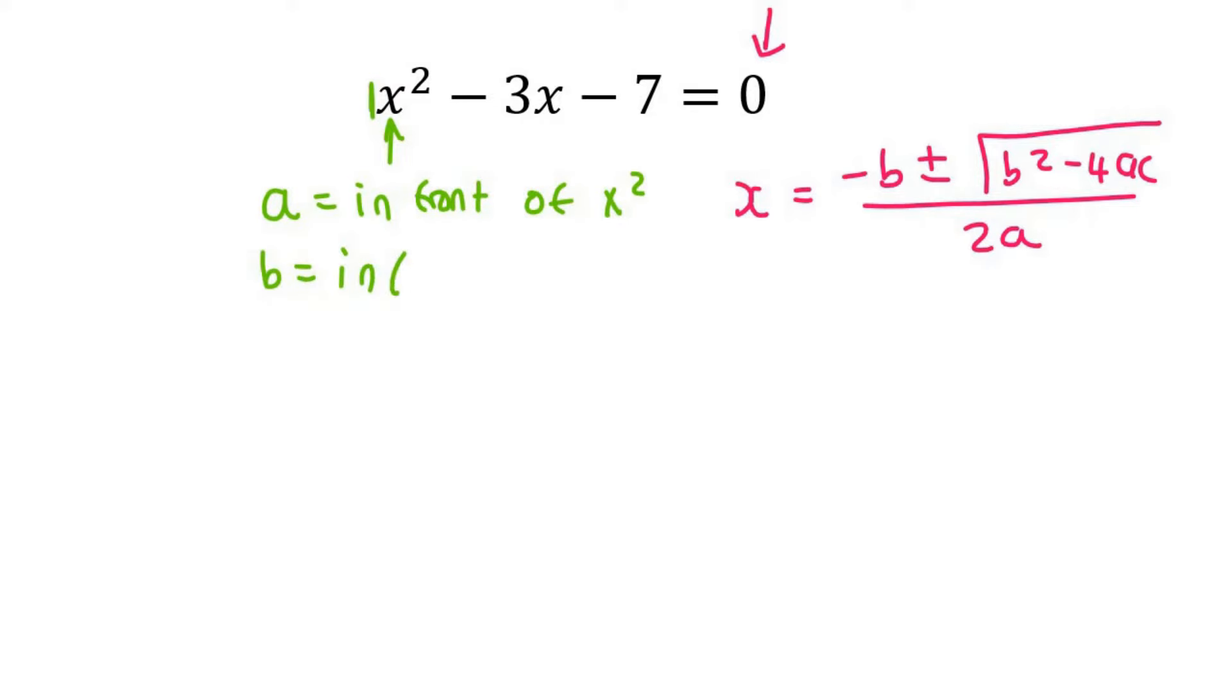b is in front of x, so b would be minus 3. You must include the negative if there is one. And then c will be the other number, which is negative 7.